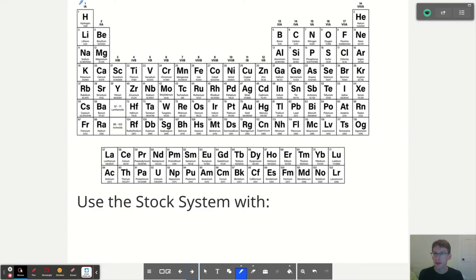So again, with group one, you know it's positive one. Group two, they're always going to be positive two ions. But these guys right in here, the d-block, you don't know what charge they're going to have in a compound.